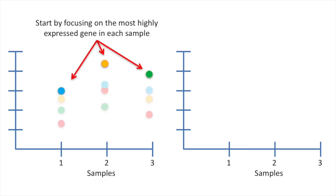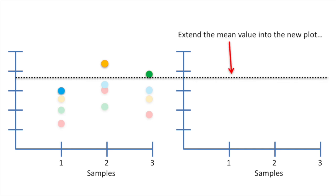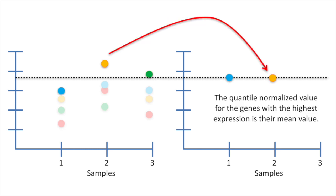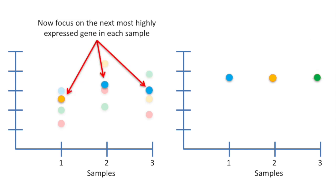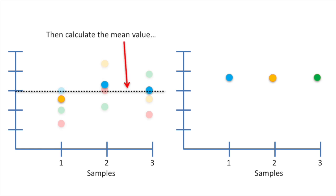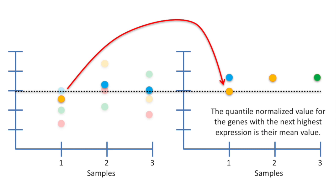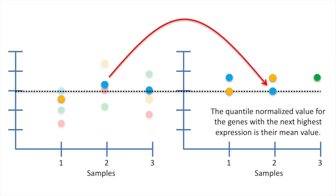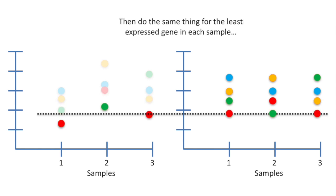You start by focusing on the most highly expressed gene in each sample. Then calculate the mean value. Now you extend the mean value into the new plot. The quantile normalized value for the genes with the highest expression is their mean value. Now focus on the next most highly expressed gene in each sample. Then calculate the mean value. Extend the mean value into the new plot. The quantile normalized value for the genes with the next highest expression is their mean value. Then do the same thing for the third most expressed gene in each sample, and so on and so on. Finally, you do the same thing for the least expressed gene in each sample.